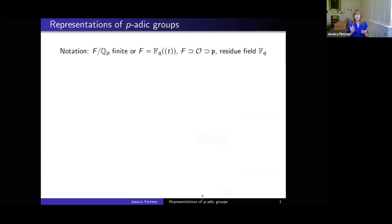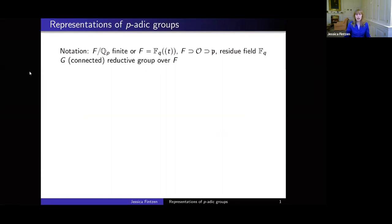For this talk, the notation is the following: F is a finite extension of Q_p, or a local function field. So I'm working with a non-archimedean local field — that's what I mean by p-adic group, a group over that field. Inside F we have a ring of integers O, the maximal ideal P, and the residue field is denoted by F_q. The main object for this talk is G, which is a connected reductive group over this local field F.